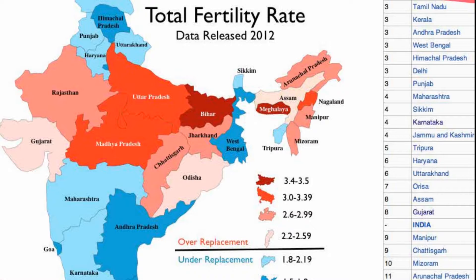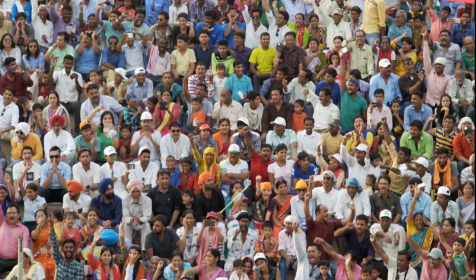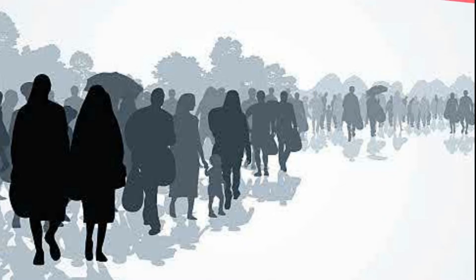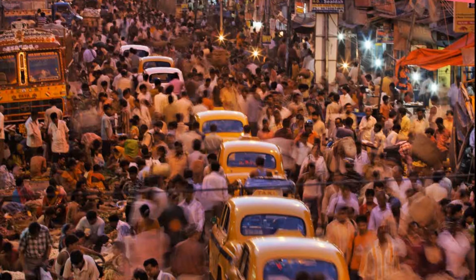Besides natural increase, population change is also affected by migration — the movement of people from one place to another. When people from another area or country come into an area, it is called in-migration or immigration. Conversely, when people leave an area to settle elsewhere, it is called out-migration or emigration. Presently, migration is very limited due to strict migration laws in many nations. But in historical times, people migrated thousands of kilometers to settle in new lands, causing population changes across different areas.